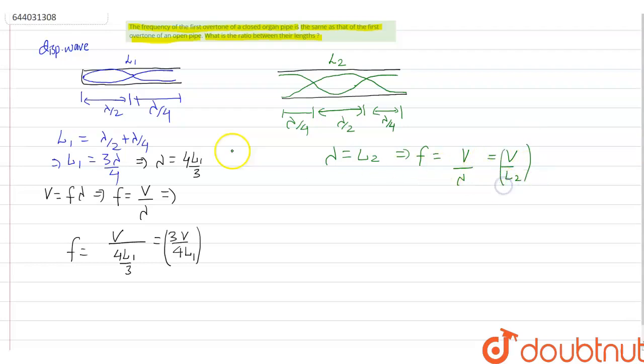And in the question it is given that the frequency in the two cases is same. So according to the question you can equate the frequencies of these terms. Here 3V upon 4L1, frequency of first overtone of closed organ pipe, is equal to